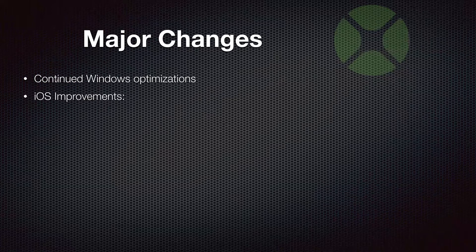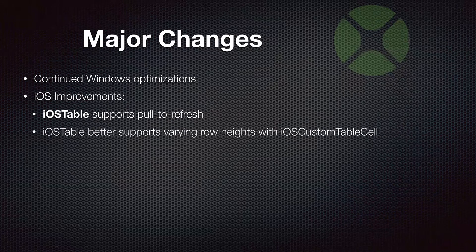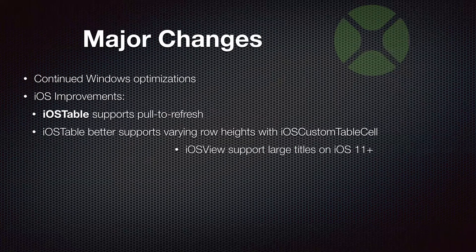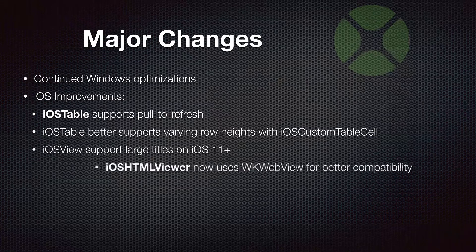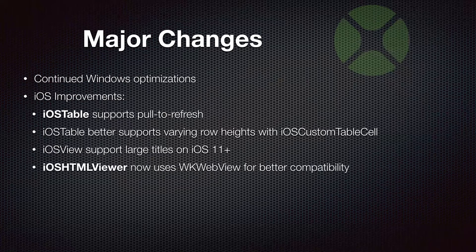iOS added several improvements. The iOS table added the pull-to-refresh feature — you drag down with your finger on a list and get that animation to reload your data. Also added was better support for various row heights when using custom cells in your iOS table, allowing for a much more flexible UI design. A new feature of iOS 11 was large titles, and iOS views now support these.